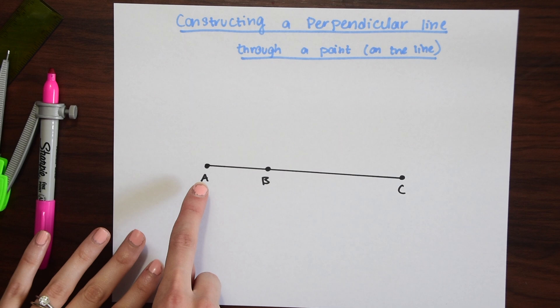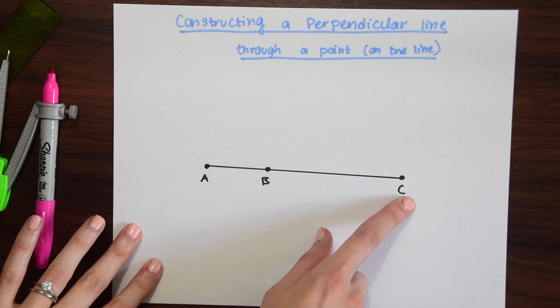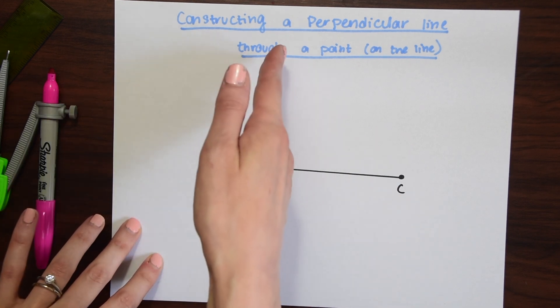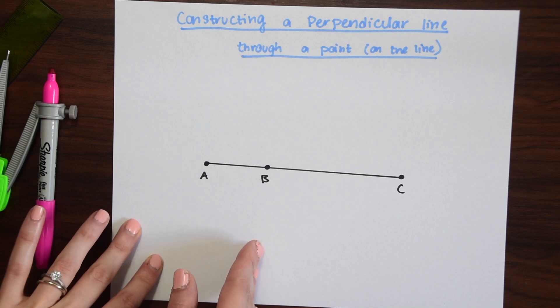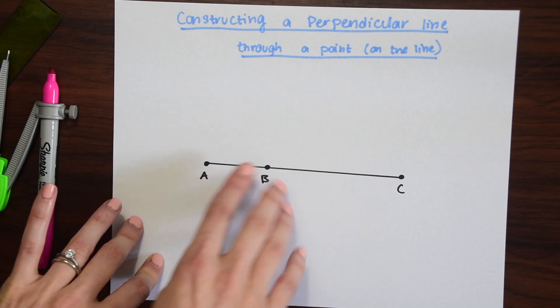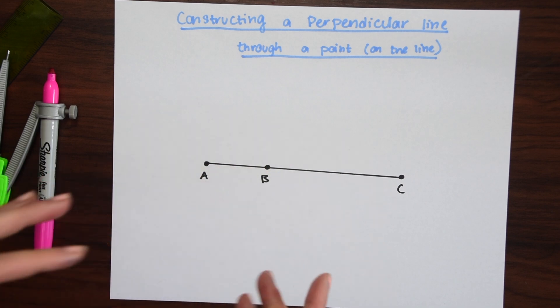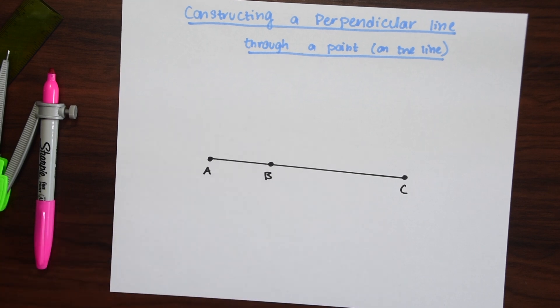So notice here we have points A, B, and C on this line and we want to construct a perpendicular line right through point B. Notice point B isn't in the middle so that's why we need to use a different method for constructing this perpendicular line than we've seen before.